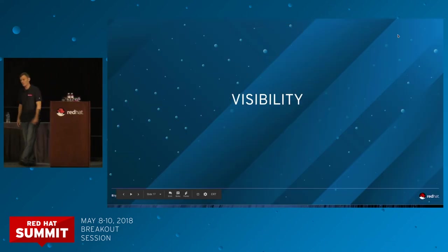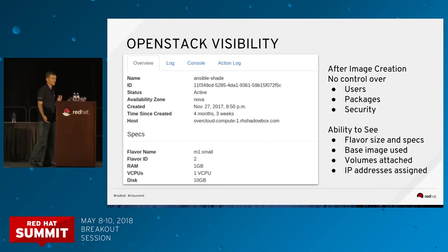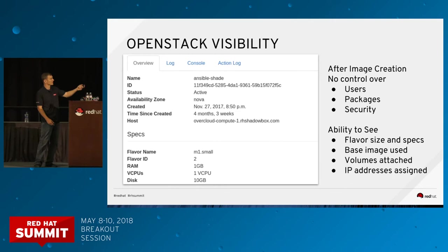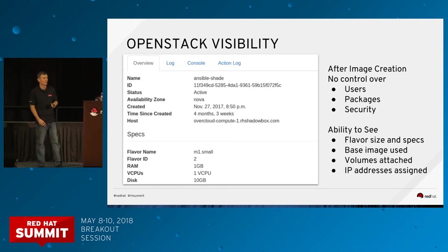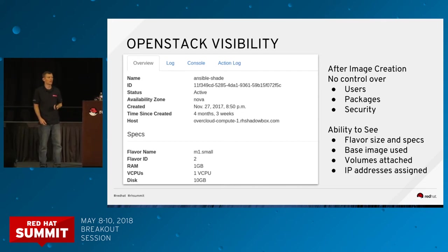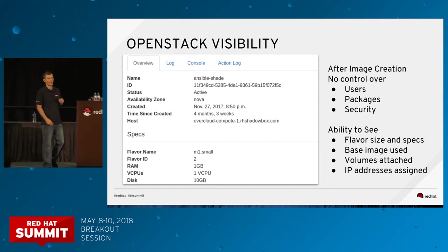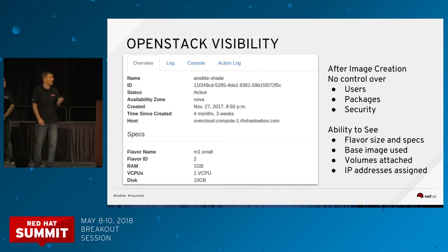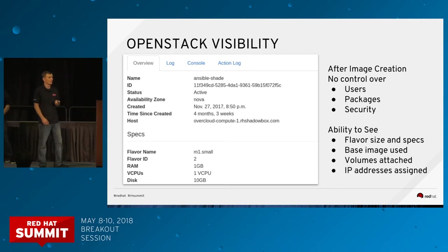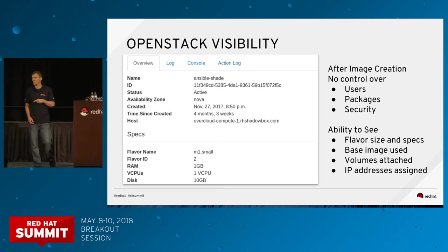Now we're going to talk about visibility. Our entire stack has an API layer that CloudForms has access to. OpenStack itself has some components we can see about workloads: the base image they were built from, what flavor they chose, how many resources are assigned, IP addresses, and any volumes attached. But the things I can't see is what the user does with that instance after they provision it — maybe they change user credentials, add packages, or apply security settings I don't want in my environment like SELinux set to permissive. I don't have any visibility into that from OpenStack once an instance is launched.